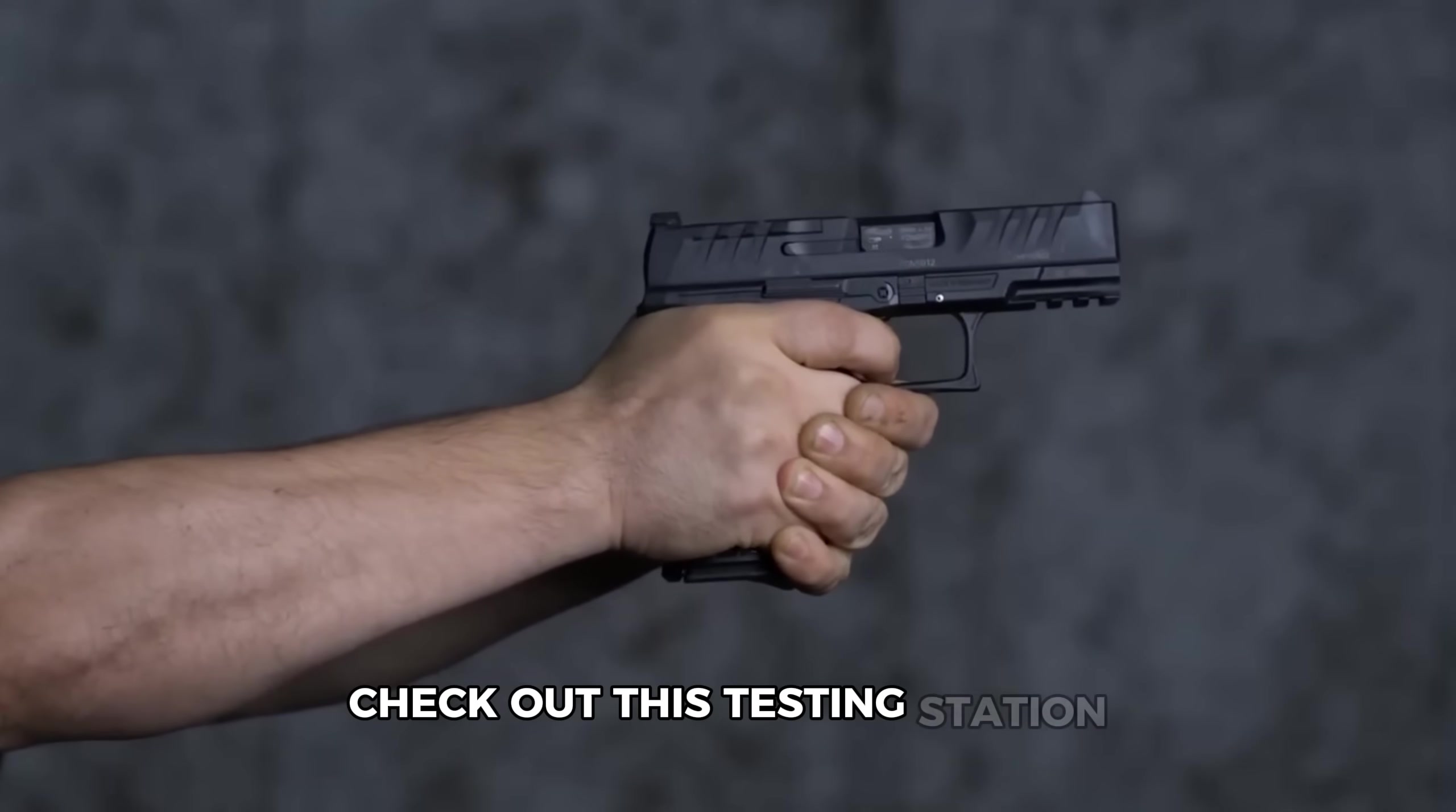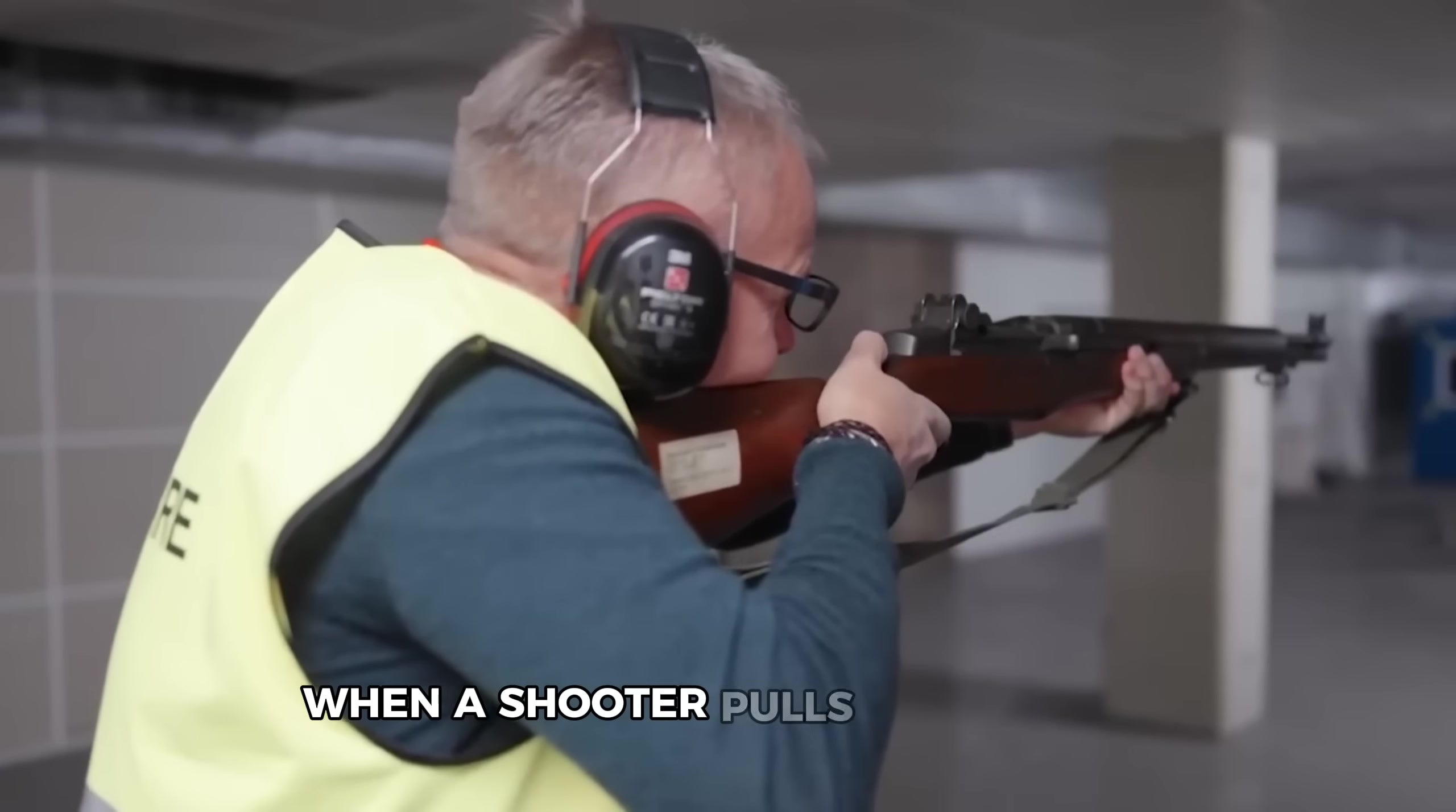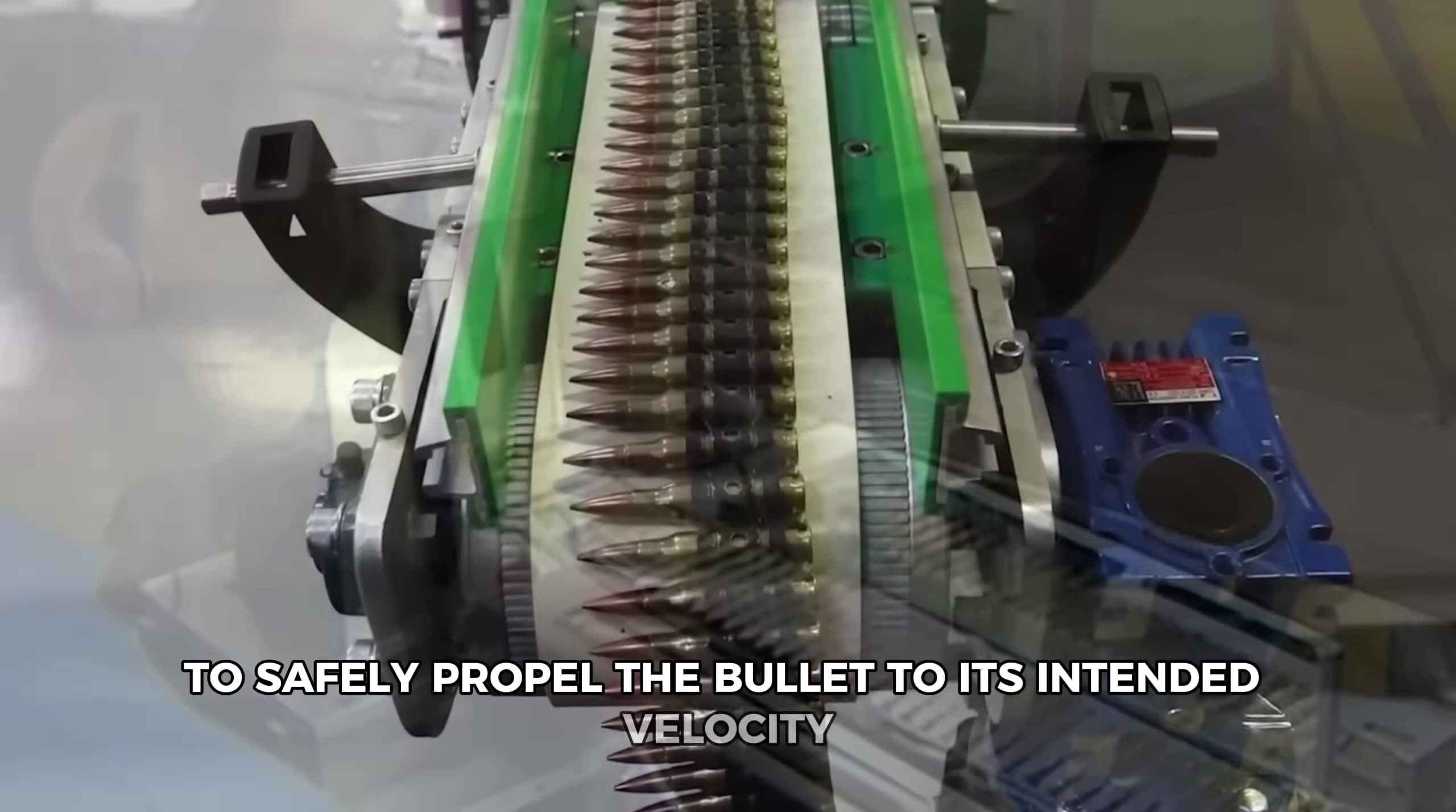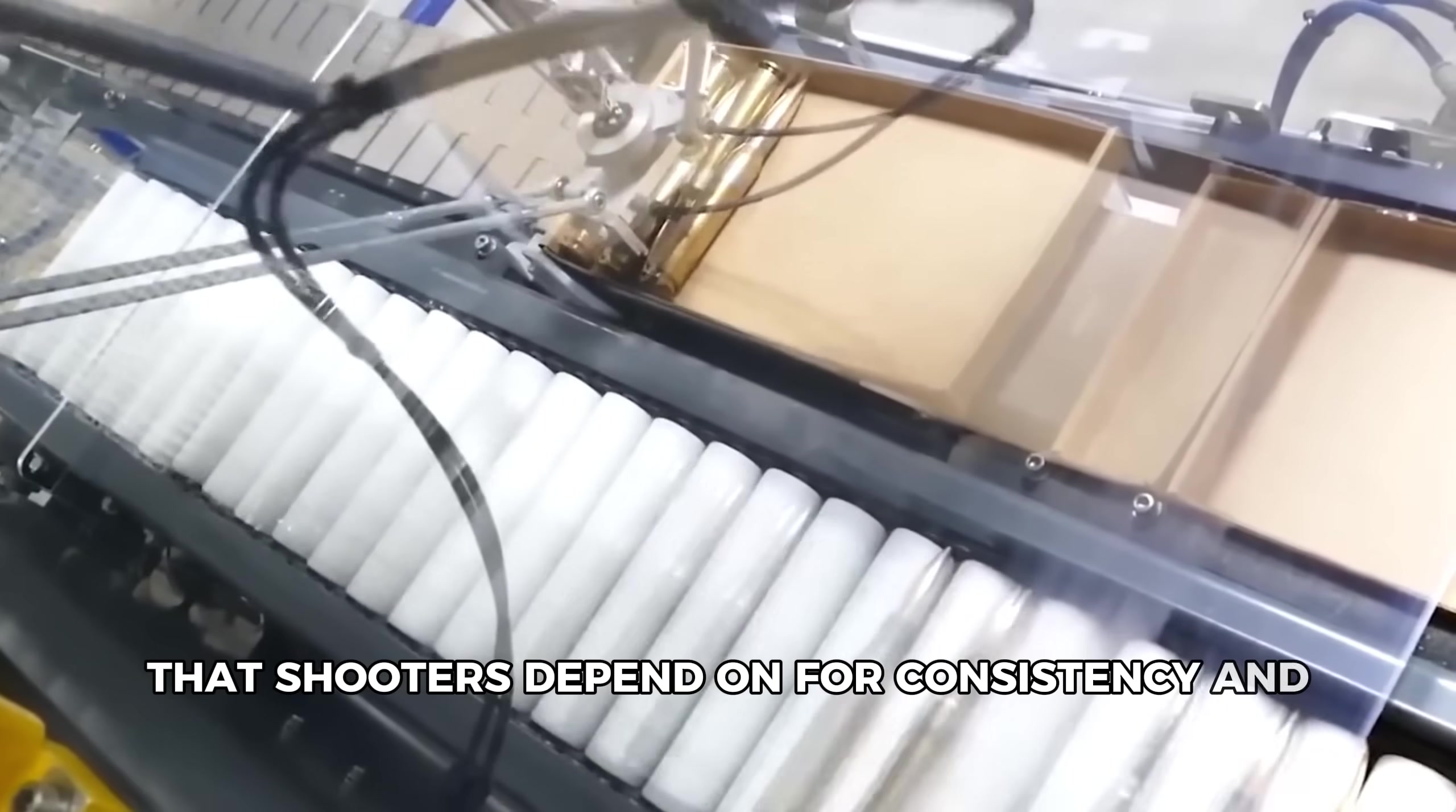Check out this testing station where samples are burned in a controlled environment to measure pressure curves and burn rates. These detailed measurements ensure that when a shooter pulls the trigger, the propellant will ignite and burn at exactly the rate needed to safely propel the bullet to its intended velocity. No more, no less. The rigorous quality control connects directly to the real-world performance that shooters depend on for consistency and safety.